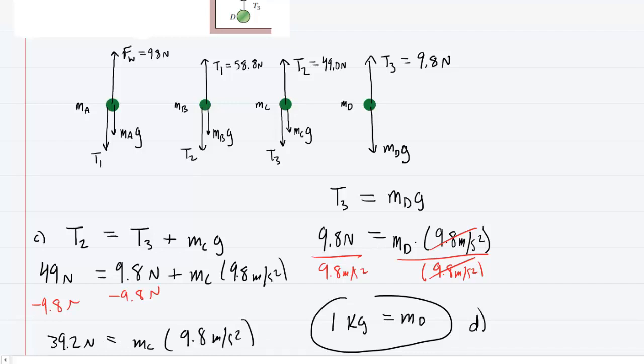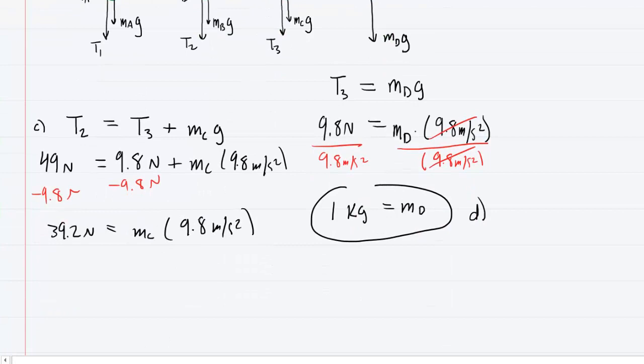And then to finish solving for the mass of disk C, just divide both sides of the equation by 9.8. So this will cancel out. You'll divide this by 9.8 meters per second squared, and you'll end up with a mass of four kilograms for disk C. So this is the correct answer to part C.